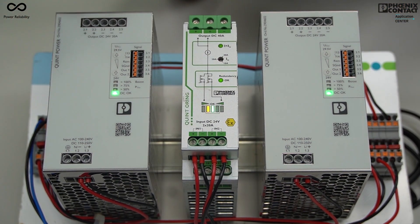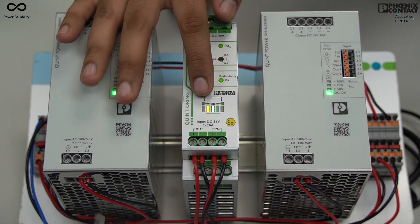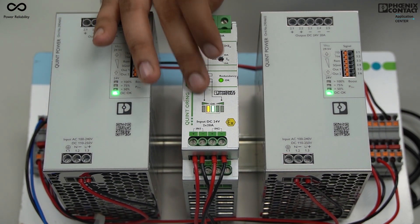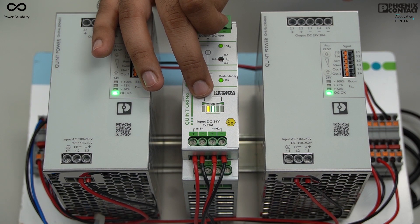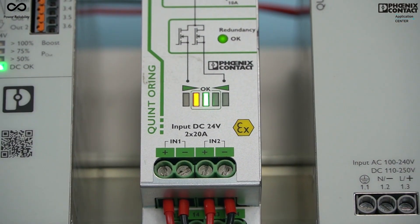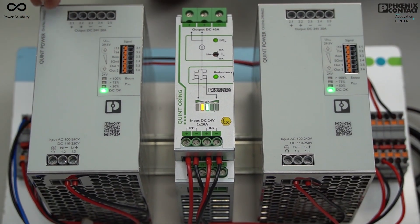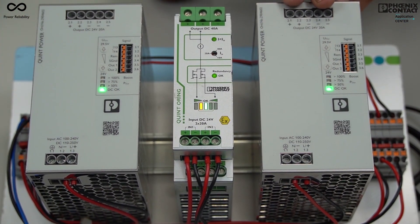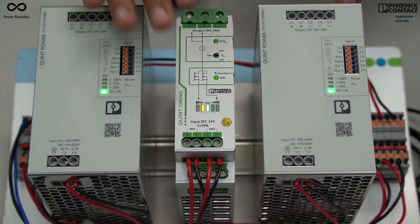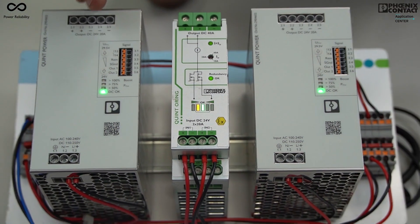I have changed the output voltage of the first power supply and you can see the indication in the yellow color. This shows that the first power supply is working at higher voltage and the second power supply is working at lower voltage. But this is still under control with auto current balancing feature.